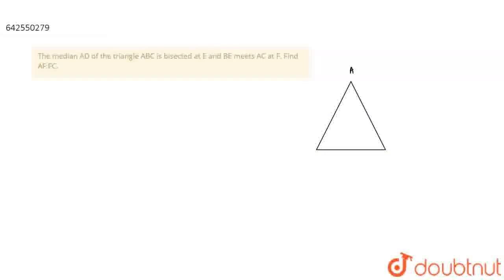So here we have the question. The median AD of triangle ABC. Let's make a triangle A, B, C. We are given that median AD is bisected at E, and BE meets AC at F. So AD is bisected at E, and BE meets AC at F. We have to find AF upon FC.